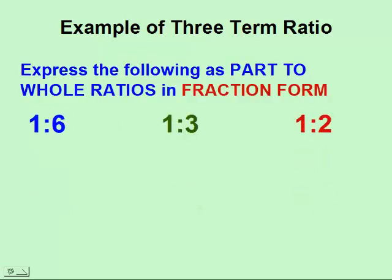Let's write these in fraction form. So for the first ratio, it would be one over six. The second ratio would be one over three. And the third ratio would be one over two.